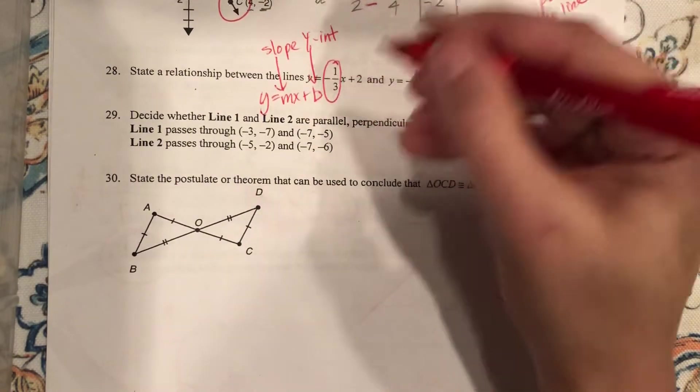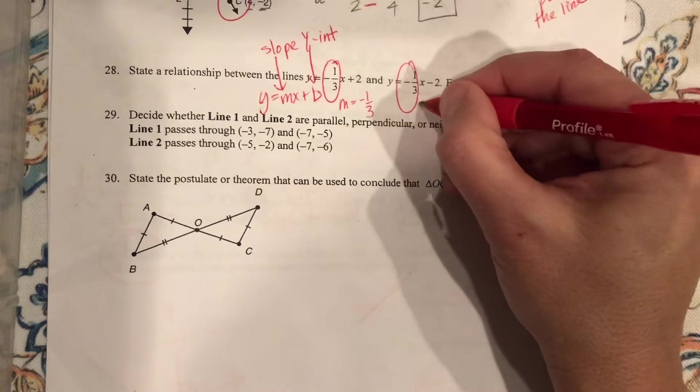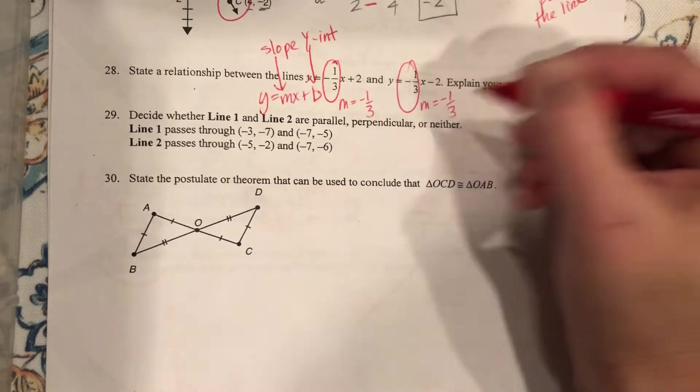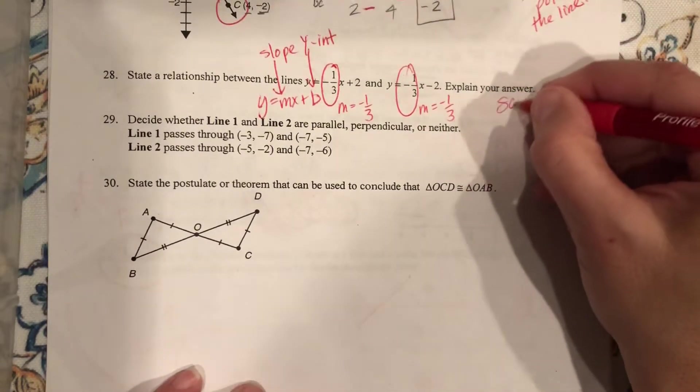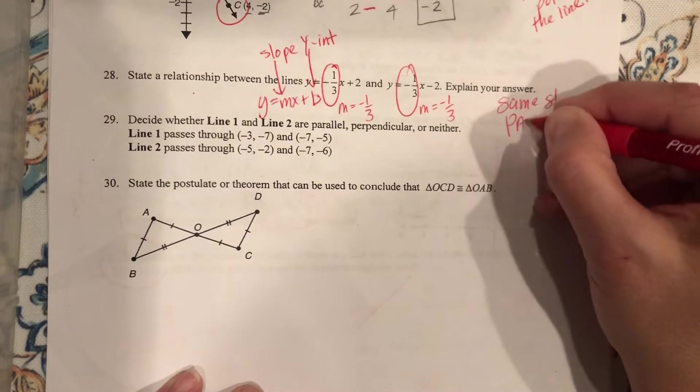So, the slope of this guy is negative 1 third, and the slope of this guy is negative 1 third. So what does that mean? Same slope, which means the lines are parallel.